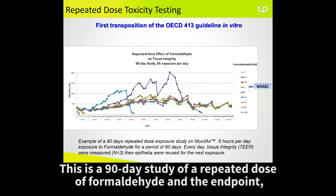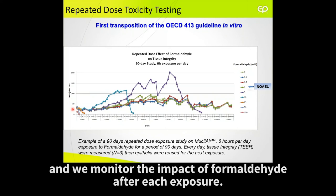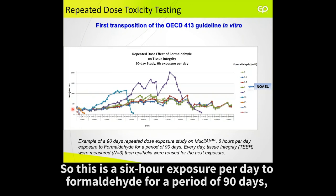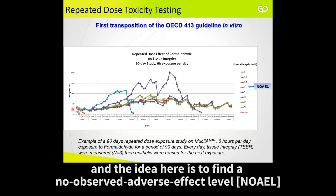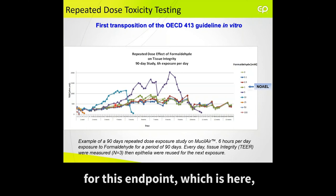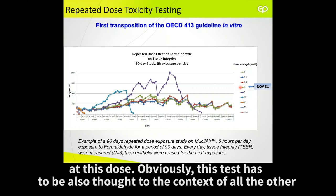This is an example of repeated dose toxicity — a 90-day study of repeated doses of formaldehyde. The endpoint represented here is transepithelial electrical resistance, and we monitor the impact of formaldehyde after each exposure. This is a six-hour exposure per day to formaldehyde for a period of 90 days. The idea is to find a no-observed adverse effect level for this endpoint, which is here at this dose. Obviously, this has to be also sought in the context of all the other endpoints presented before.